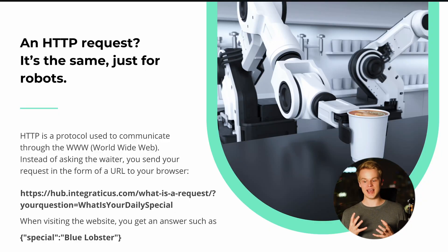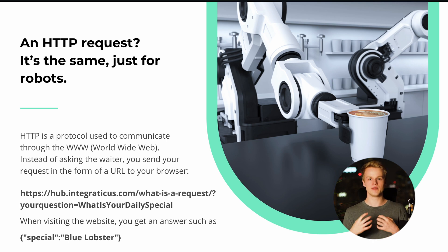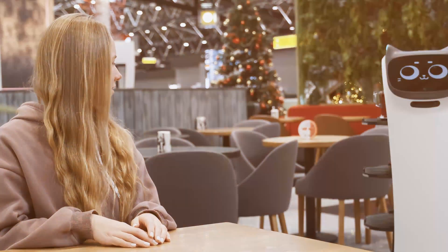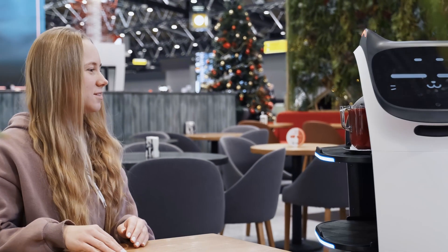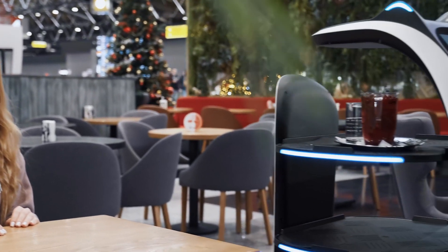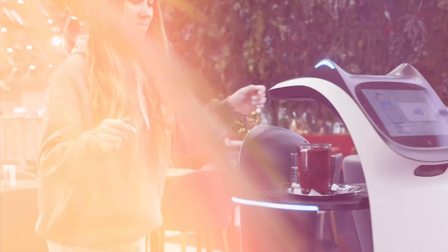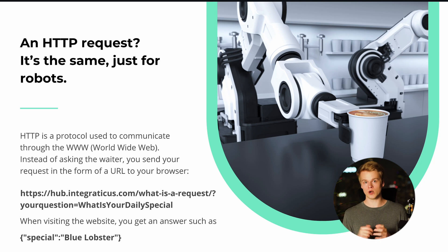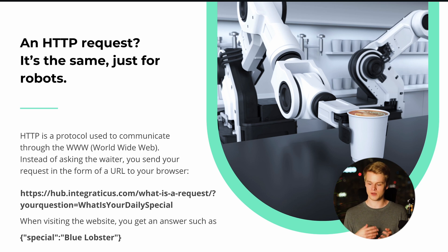Now let's look at what an actual HTTP request is. Instead of asking a waiter, I am going to ask a robot. So instead of waiting for the waiter to answer, I'm waiting for the robot to give me a specific answer for a specific task. Robots need to be programmed, so they need a specific context, which is where you need to structure things.